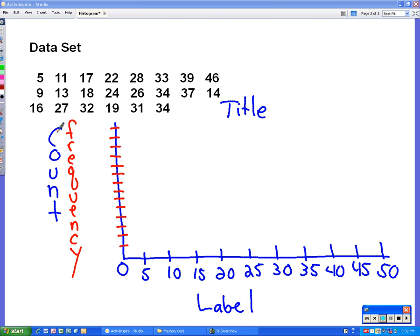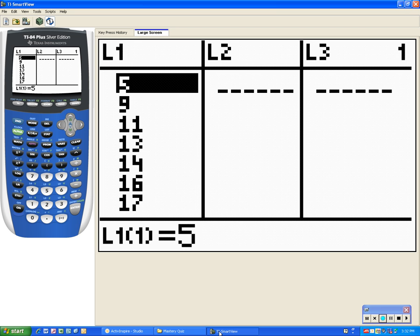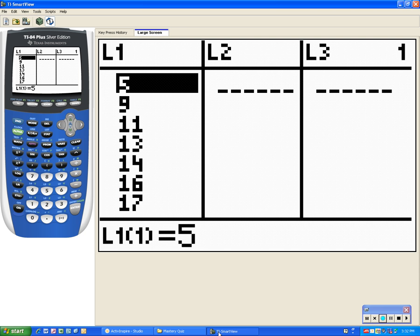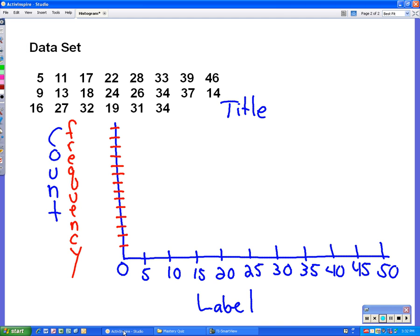So we're going to begin. So we're going to look at the calculator. Do we have any numbers from 0 up to 5? We have a 5, but we don't include that in the first class. So no, we don't have any numbers from 0 up to 5. So there is no bar on this first one. The next class is 5 up to 10. So we take a look. How many numbers do we have from 5 up to 10? I see two of them. So on our histogram, we're going to start at the 5. We're going to go up 2, over, back down on the 10.